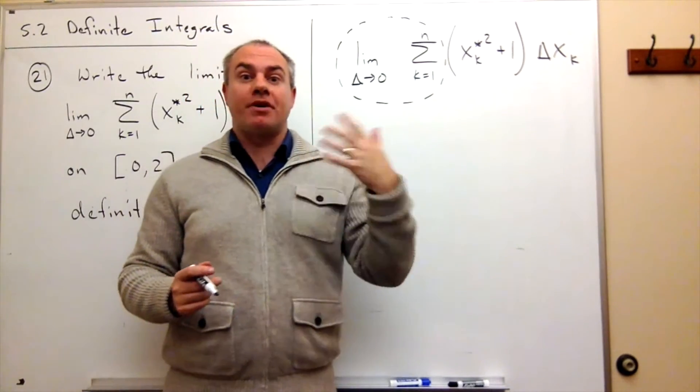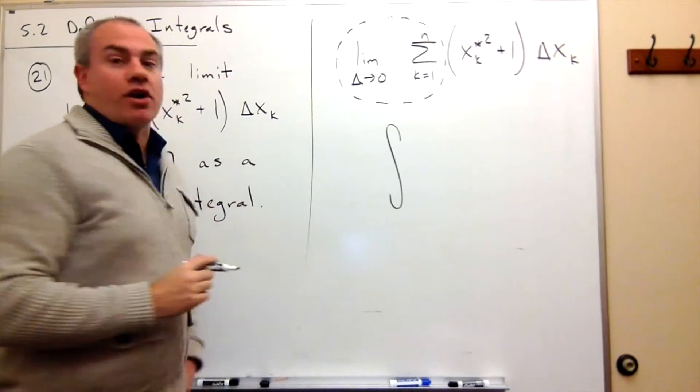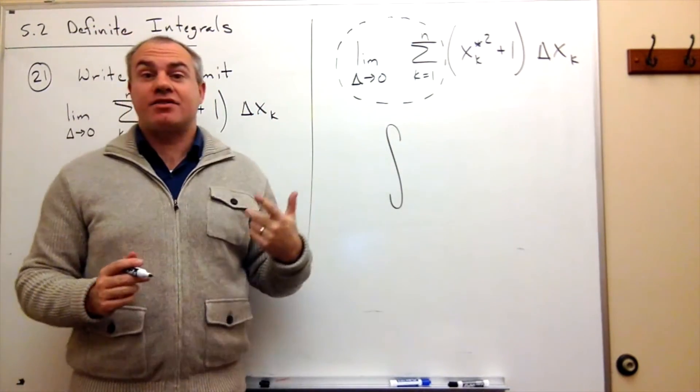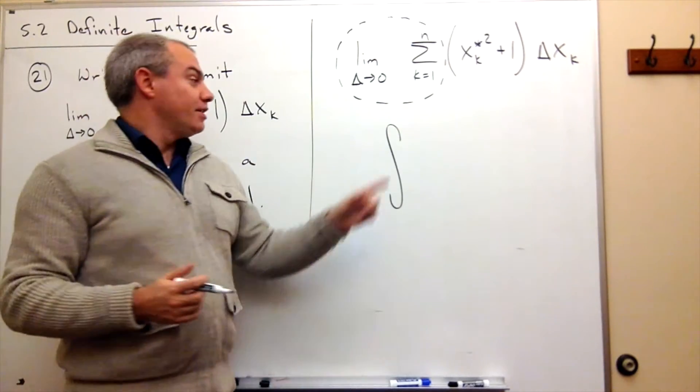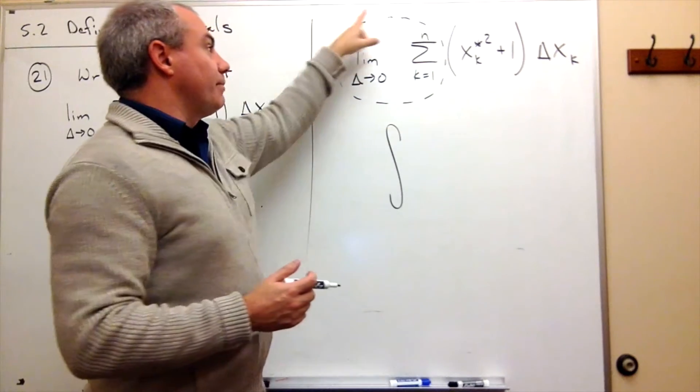So we're summing up a bunch of things and the way that we write that as a definite integral is our integral sign. It's kind of like this integral sign is a big S for the word sum. So it's the sum of a bunch of things, and that's the limit of the sum.